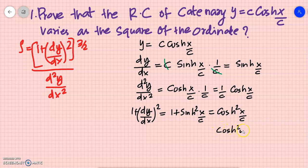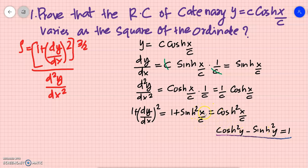Using the hyperbolic identity: cosh²(y) − sinh²(y) = 1, so 1 + sinh²(x/c) = cosh²(x/c).